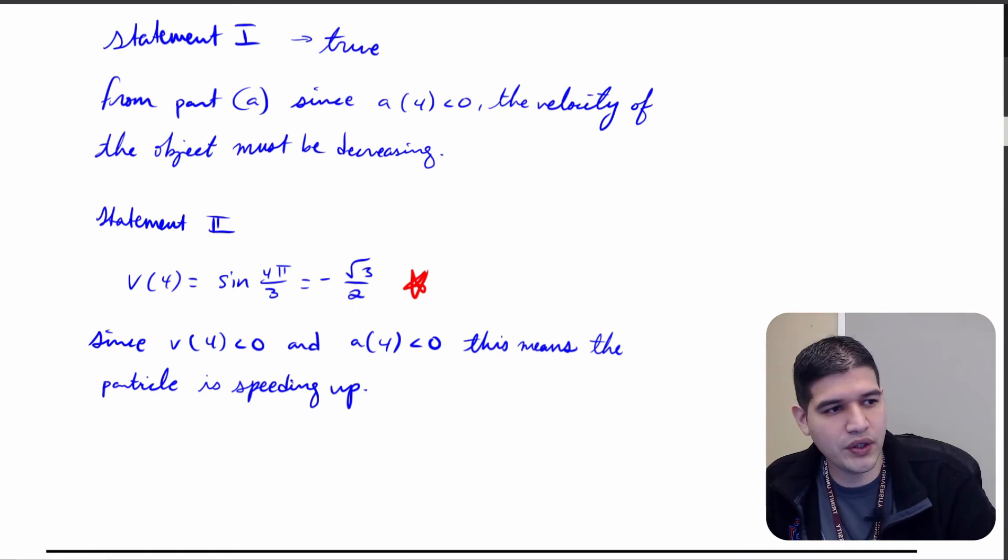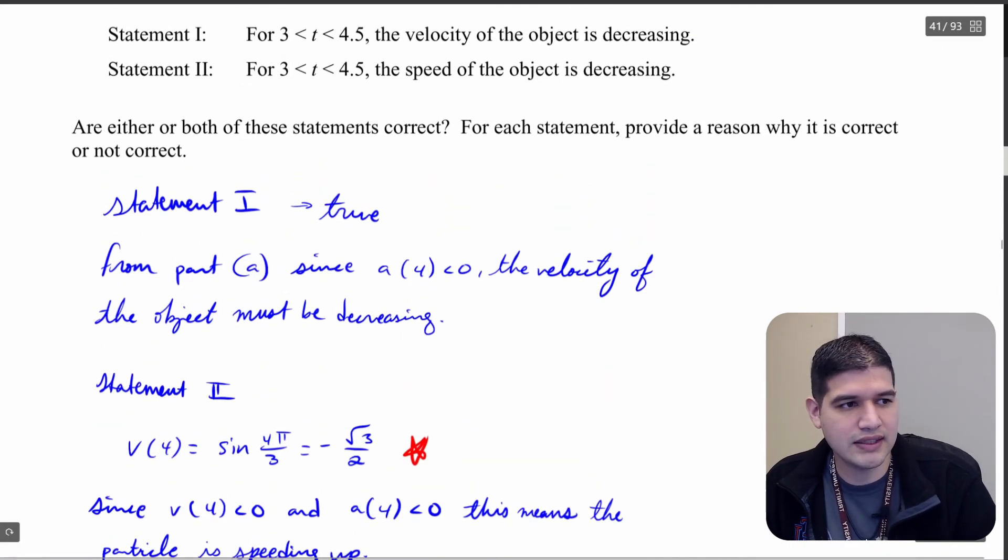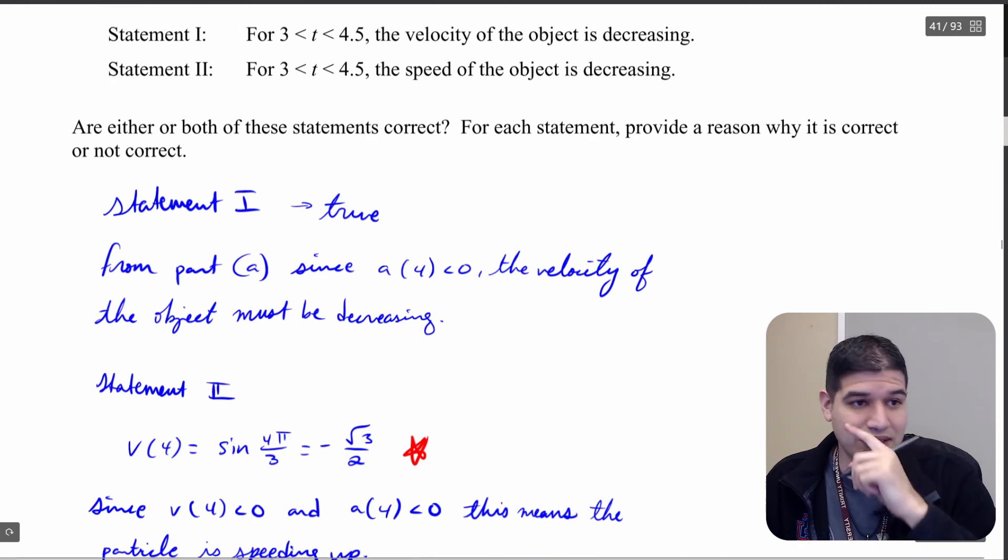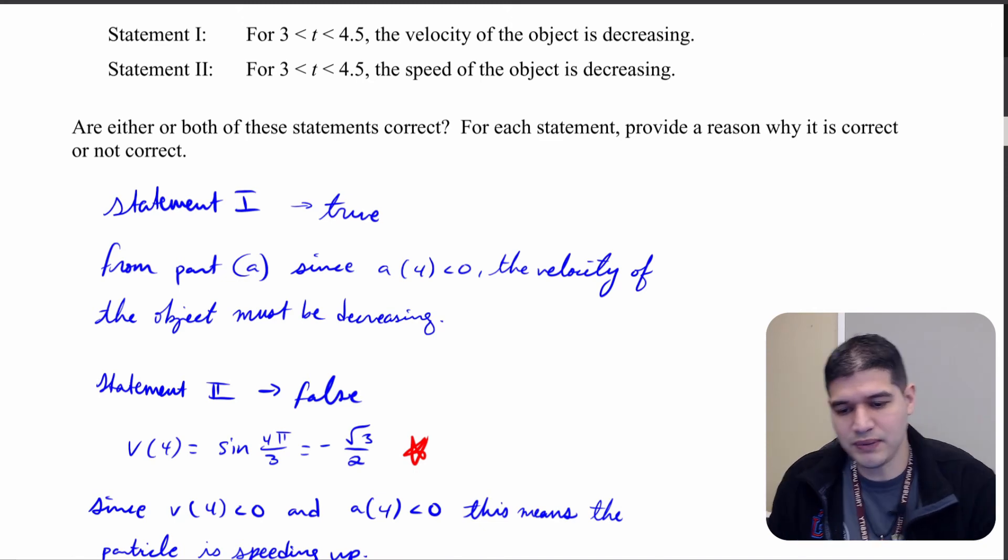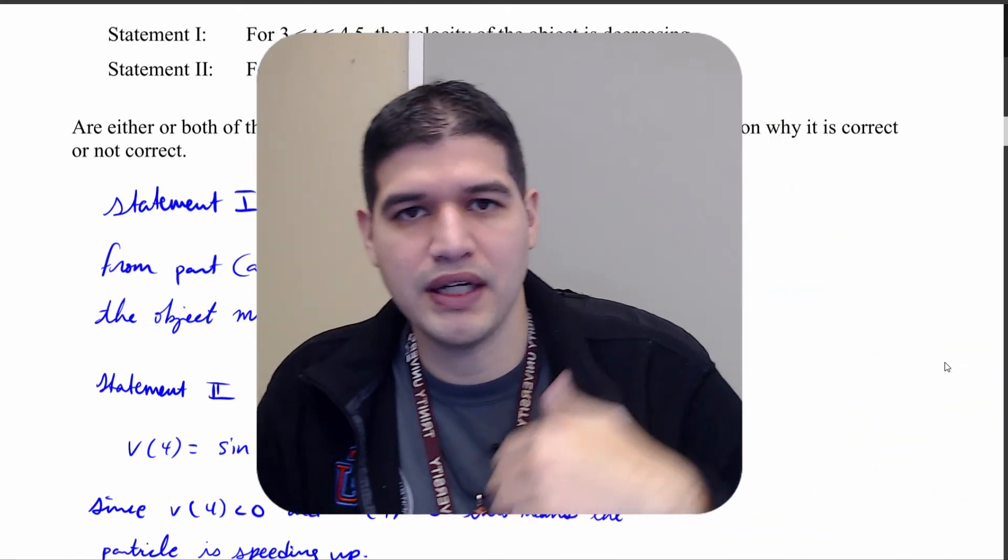So since we know that it is speeding up, and statement 2 here said specifically that the speed of the object is decreasing, we know that that's not true. So we're going to mark this one here as false, and that's going to be the last problem in this lesson.